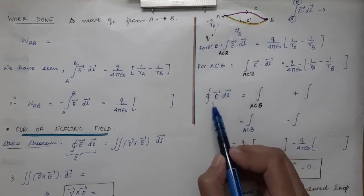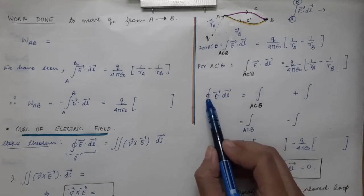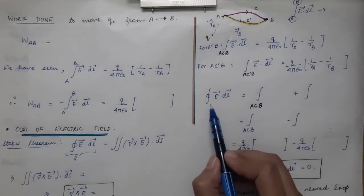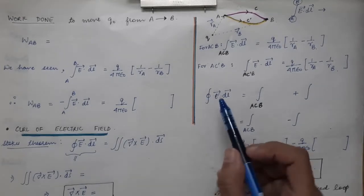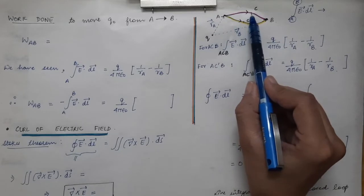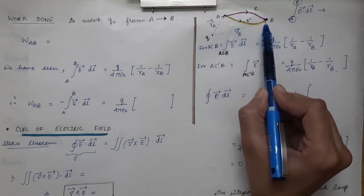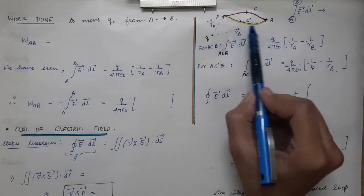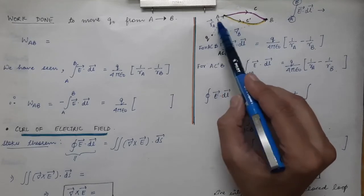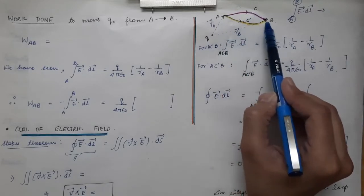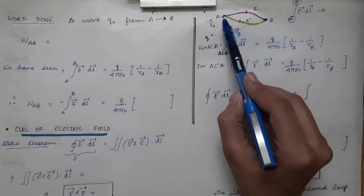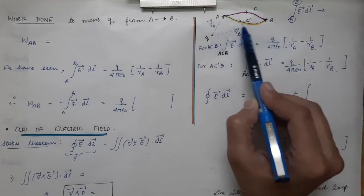Now we are going to find the line integral of electric field over a closed loop. In our case, the closed loop means moving from A to C, then to B, then back to A through path BC'A. So first you move from A to C to B, then from B to C' and back to A — you are moving in a closed loop.